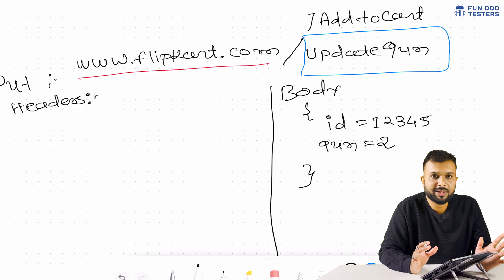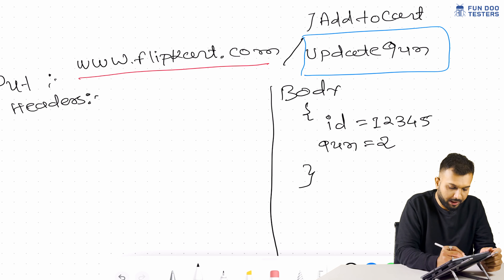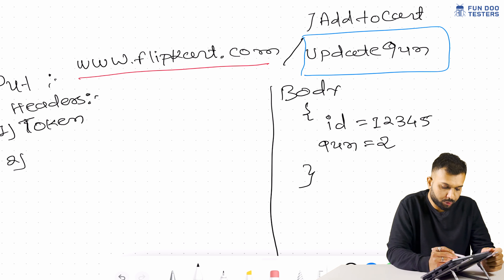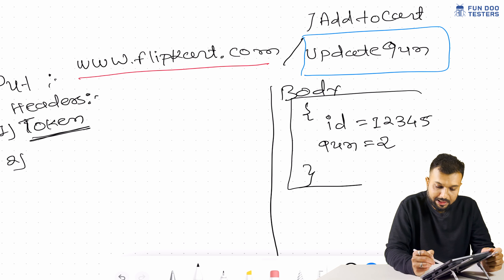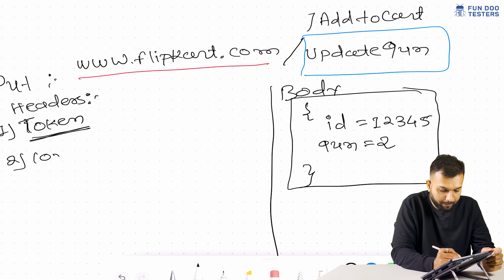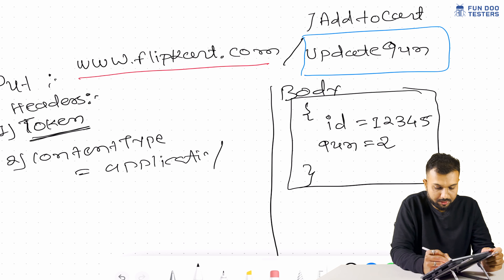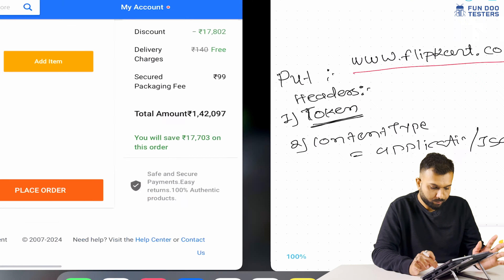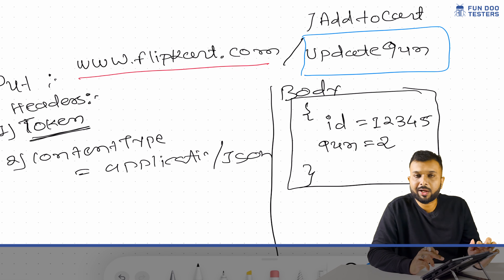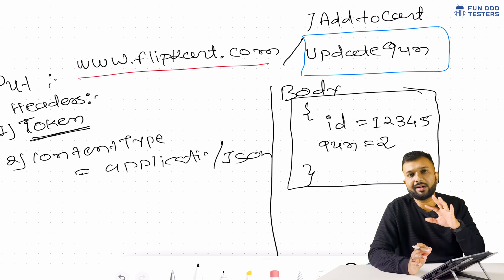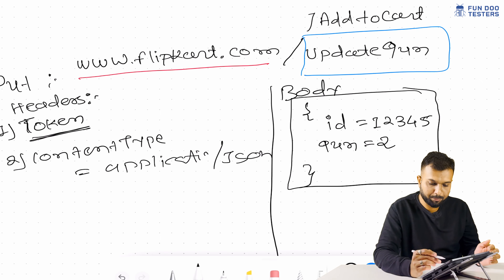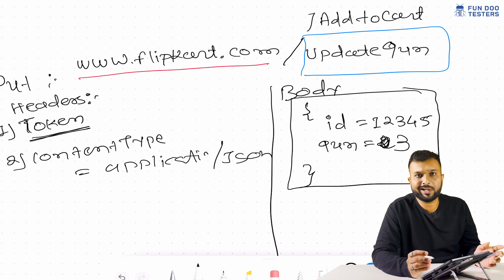For example, the product ID is 12345, which is the product ID of the iPhone 15 we added to the cart. We are now updating the quantity — the quantity value was 1 earlier but now we are passing 2. This is the body of the PUT request. For headers, we pass a token for authorization and the content-type will be application/json.